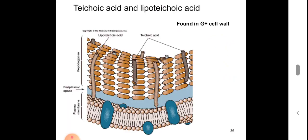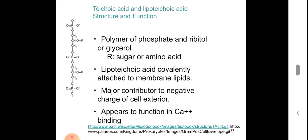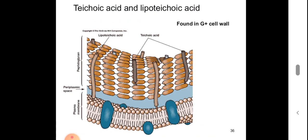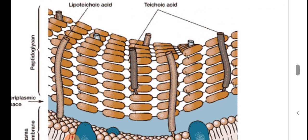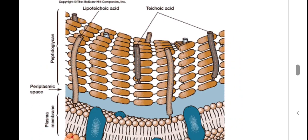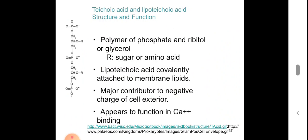Teichoic acid and lipoteichoic acid are present only in gram-positive cell walls. Teichoic acid is a polymer of phosphate and ribitol or glycerol, and they are covalently attached to the membrane lipids — passing through the periplasmic space and connecting to the membrane lipids. It is the major contributor to the negative charge of the cell exterior, and it also functions in calcium binding.